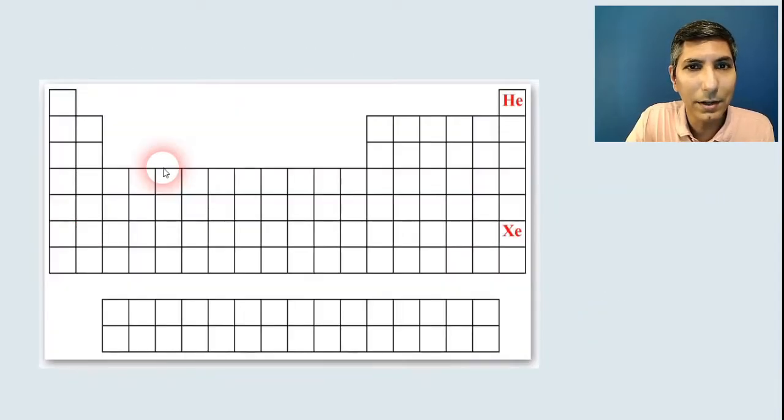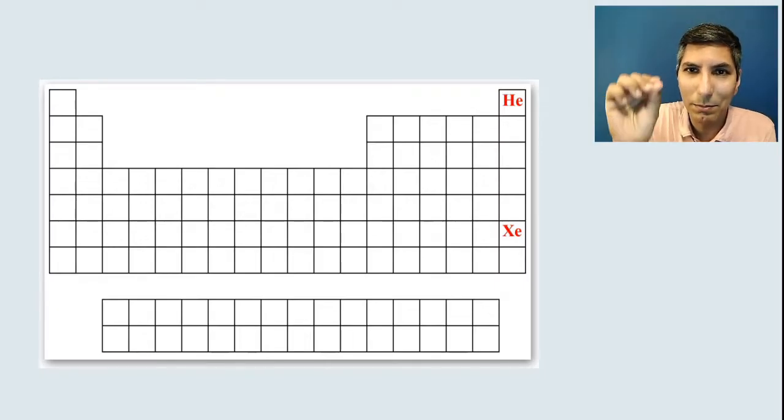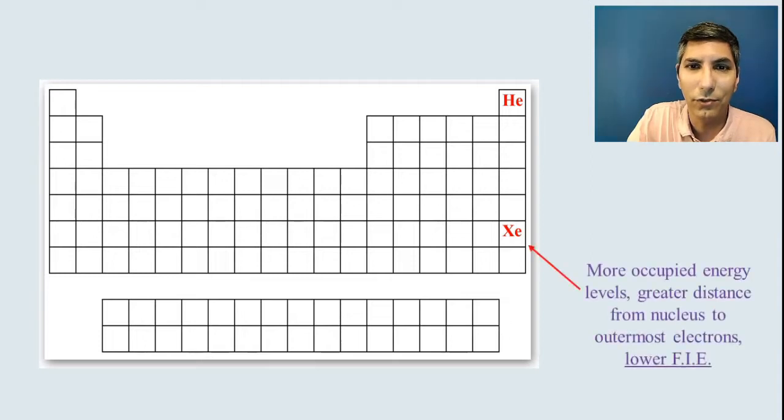Now let's compare top and bottom. Let's compare helium with xenon. Now both of these have a pretty high first ionization energy, but which one is higher? Now hopefully you remember the graphic and know that helium being higher up is going to have the higher first ionization energy.